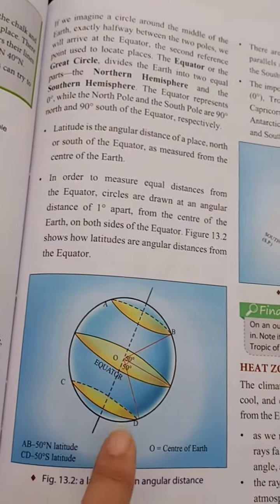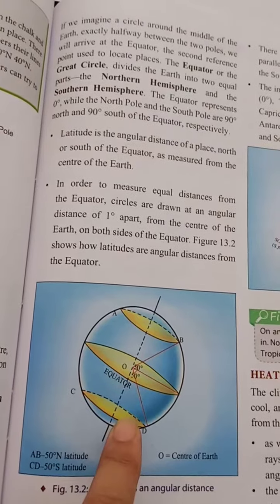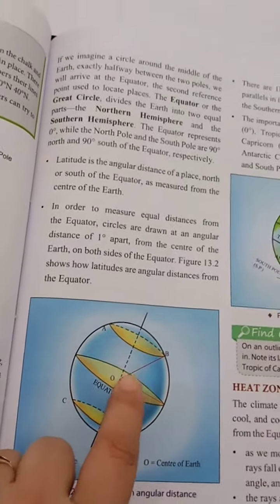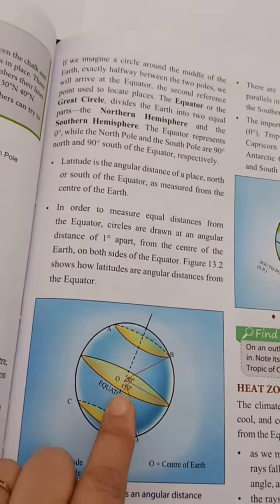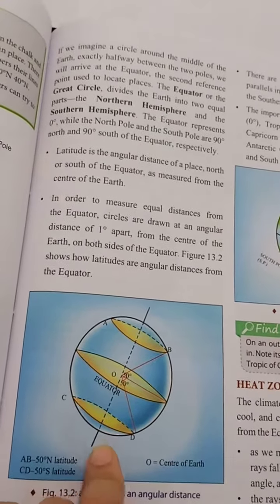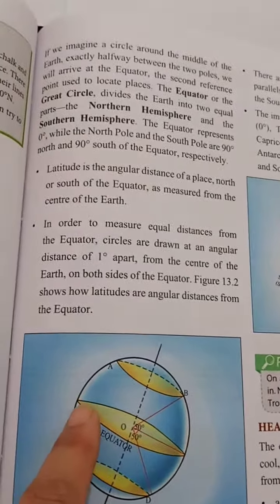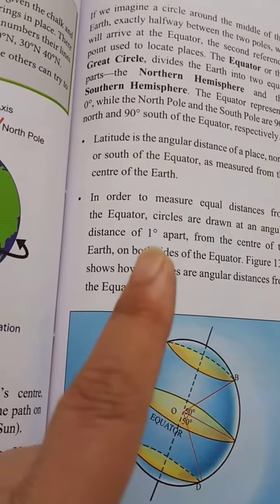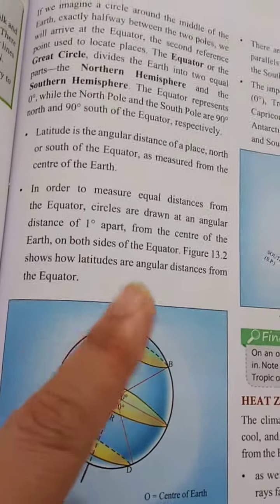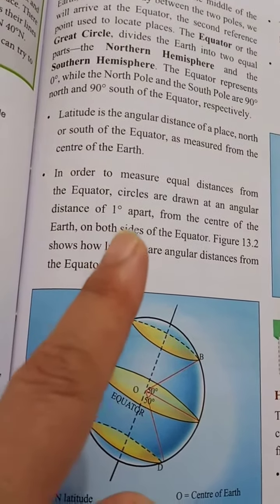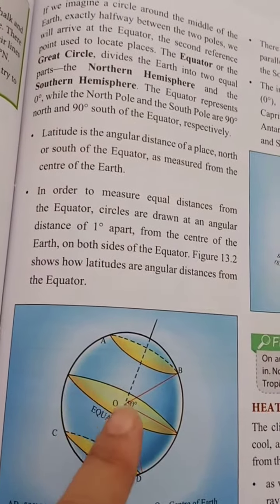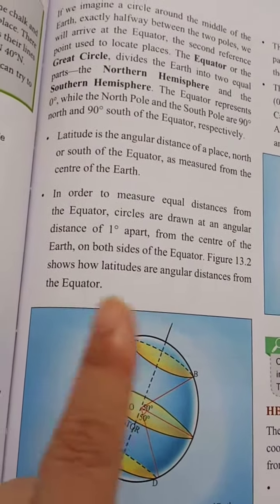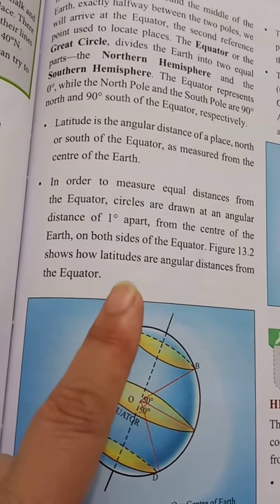Both latitudes on either side are at the same distance from the equator — they will have the same angle and the same distance. So it is the angular distance from the equator. In order to measure equal distances, circles are drawn at an angular distance of 1 degree apart — only 1 degree apart from the center of the earth on both sides of the equator.